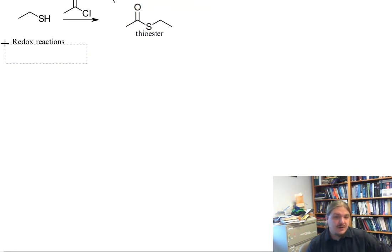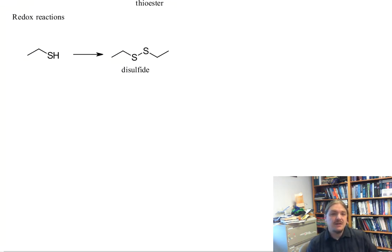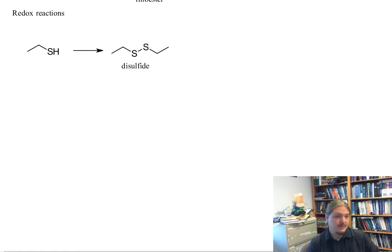The second type of chemical behavior I want to talk about for thiols are redox reactions. And there are two primary types of redox reactions. And one is for the oxidation of thiols to disulfides. The disulfide is an important sulfur containing functional group, especially in biochemistry and structural biology. It helps hold the tertiary structures of proteins together. And there's a video coming up on the chemistry of disulfides in general. This is a reaction that requires two equivalents of thiol and a mild oxidizing agent.